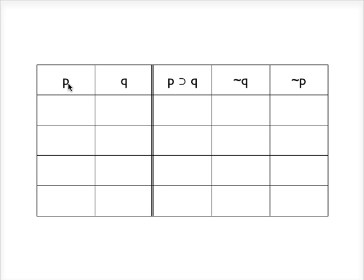P and Q are our basic atomic sentences. The first thing to do is to assign our truth values to those atomic components — what I call the reference columns.